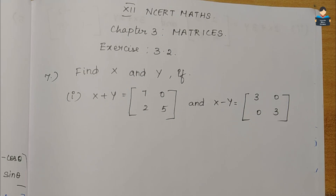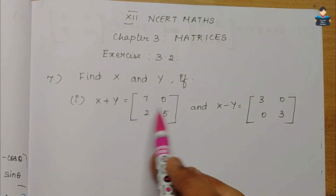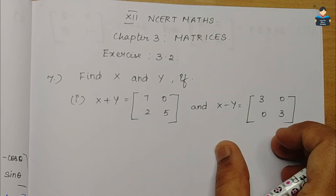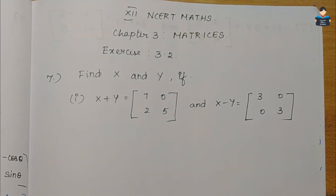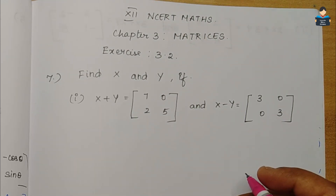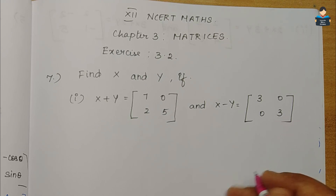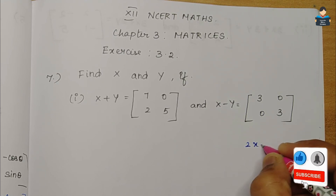Hello everyone, welcome to our channel. In this video we will look at standard NCERT Matrices Chapter 3, Exercise 3.2, Question number 7. We need to find x and y, given two matrices x plus y and x minus y. We need to find the x value and y value. Similar to how in 10th grade we solved pair of linear equations using the elimination method.